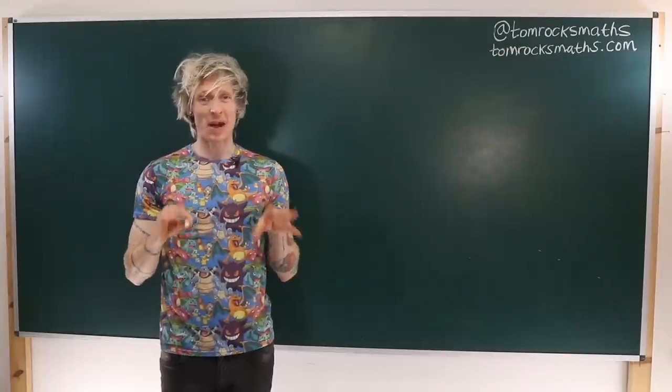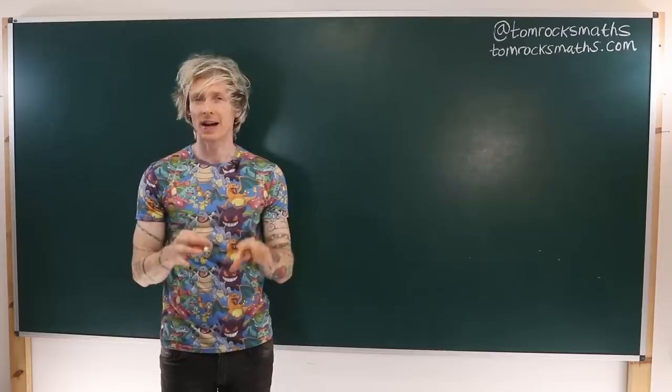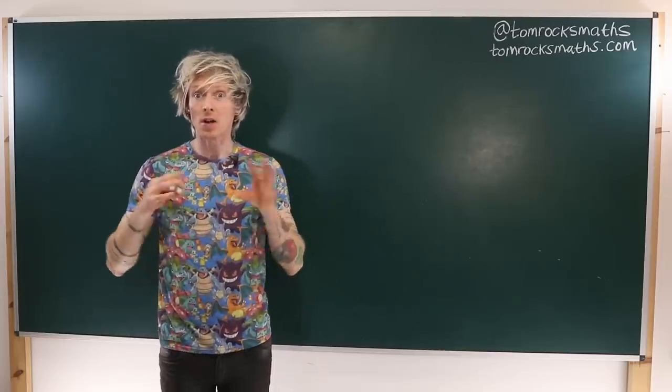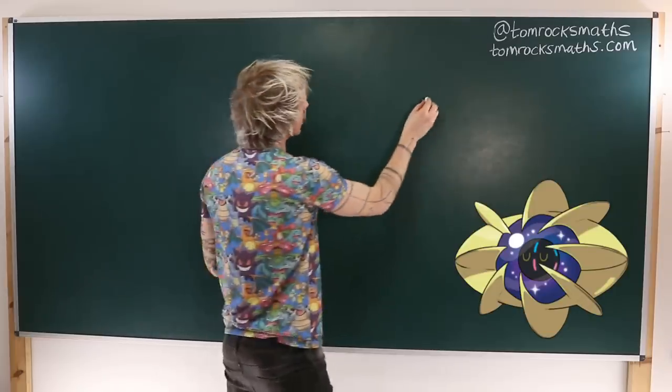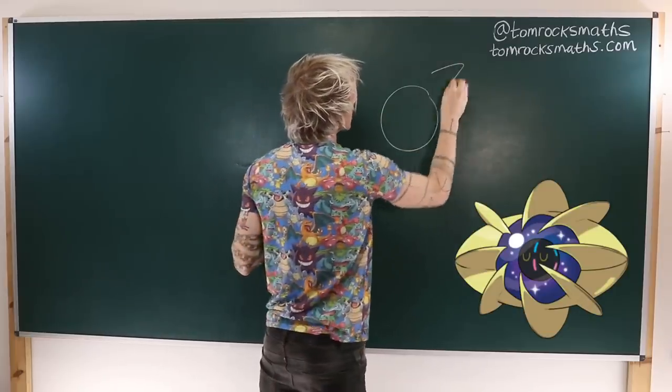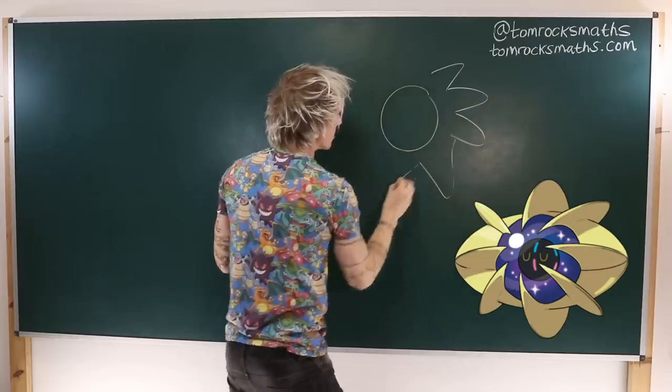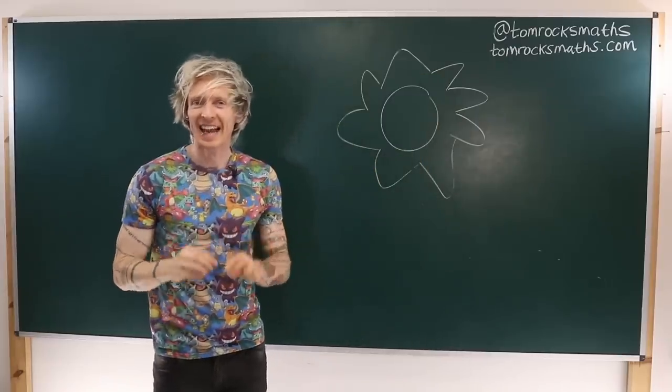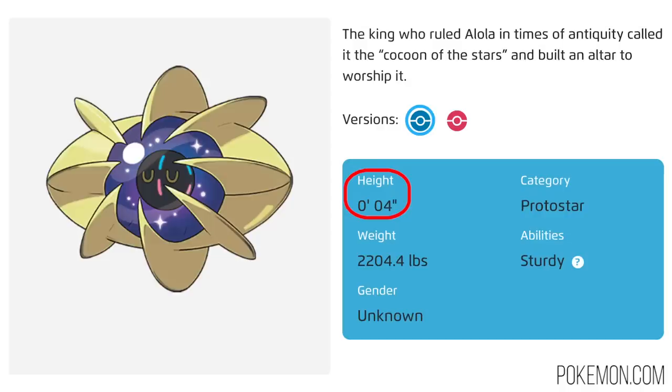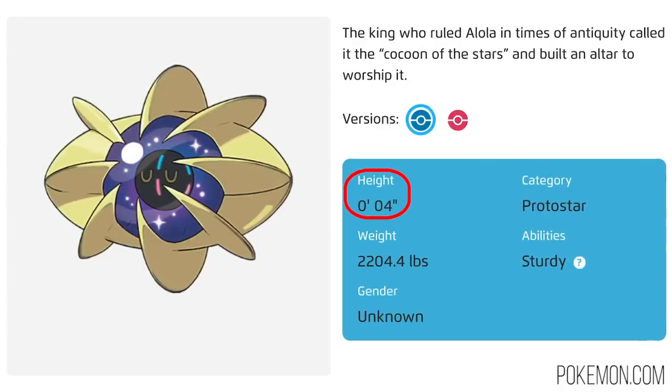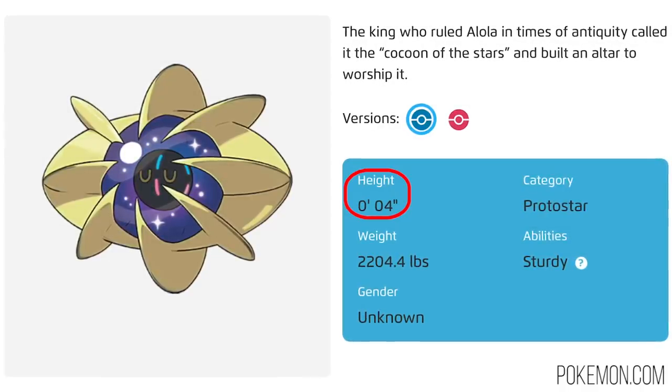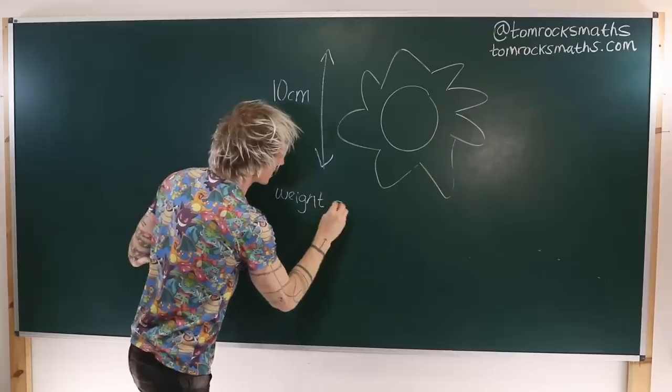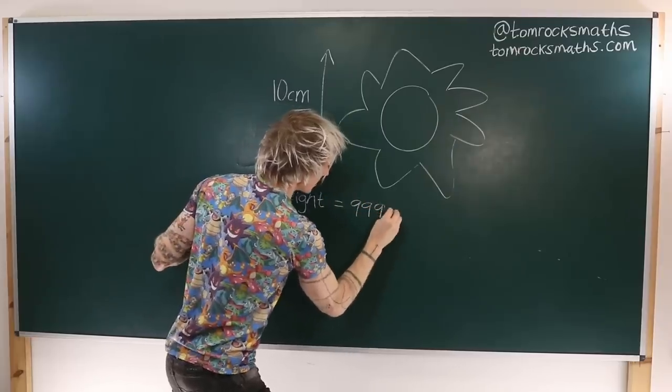Unfortunately, Wailord isn't the only Pokemon with a ridiculous value for its density. At the other extreme we have Cosmoem. This is a star-shaped Pokemon which first appeared in the games Sun and Moon. It looks much nicer than my picture, but this is the best I can do. Its Pokédex entry lists its height as 10 centimeters, and its weight a quite frankly ridiculous 999.9 kilograms.